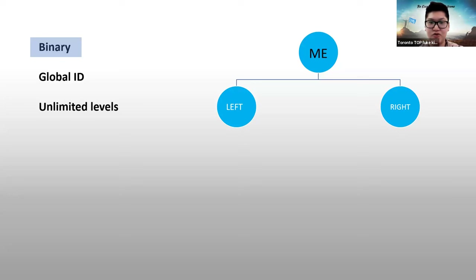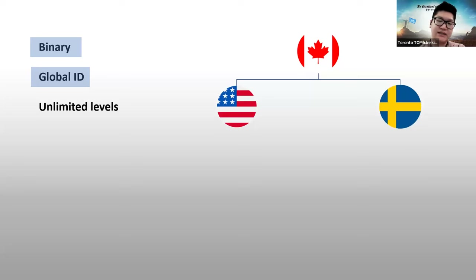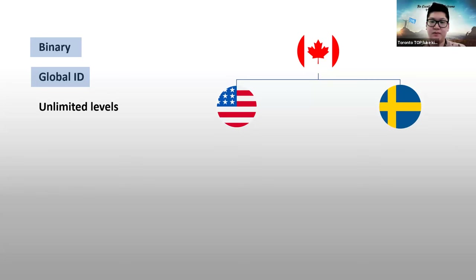Of course you have the left and right lines, and we also have the Global ID. The Global ID allows me in Canada to have partners in America and Sweden. I believe a lot of people here are not from just one country — there are people from Korea, America, and other places around the world. That allows us to use languages we're good at and expand into those areas.